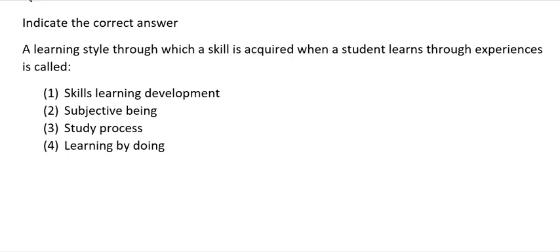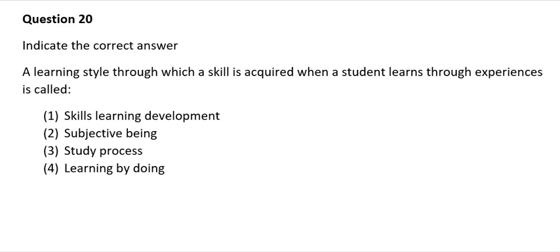Question 20: A learning style through which a skill is acquired when a student learns through experiences is called: 1) Skills learning development; 2) Subject-based learning; 3) Study process; 4) Learning by doing. The correct answer is number 4: learning by doing.